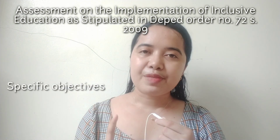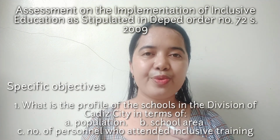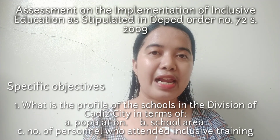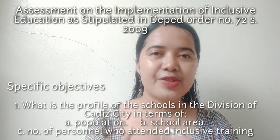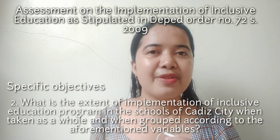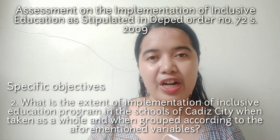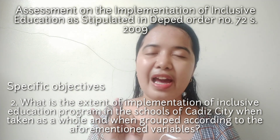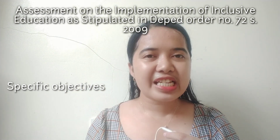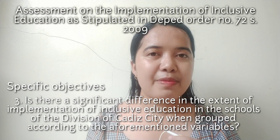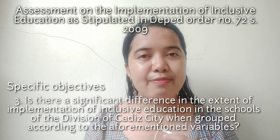The next thing we're going to do is proceed to our specific objectives. For our first question: What is the profile of the schools in the Division of Cadet City in terms of A) Population, B) School Area, and C) Number of personnel who attended inclusive education training? For the second question: What is the extent of the implementation of the inclusive education program in the schools of Cadet City when taken as a whole and when grouped according to the same variables? For the third question: Is there a significant difference in the extent of the implementation of inclusive education in the schools of the Division of Cadet City when grouped according to the aforementioned variables?